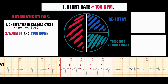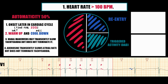Automatic focal tachycardia is characterized by a progressive rate increase at tachycardia onset — the warm-up period — and a progressive rate decrease before termination — the cool-down period. Warm-up results from a combination of sympathetic enhancement of pacemaker depolarization and gradual removal of overdrive suppression by the sinus node. Warm-up is not specific for automatic tachycardia; it can also occur with delayed afterdepolarization-dependent triggered activity or some re-entrant tachycardias. Note that vagal maneuvers and adenosine may transiently slow automatic tachycardia but do not terminate it.